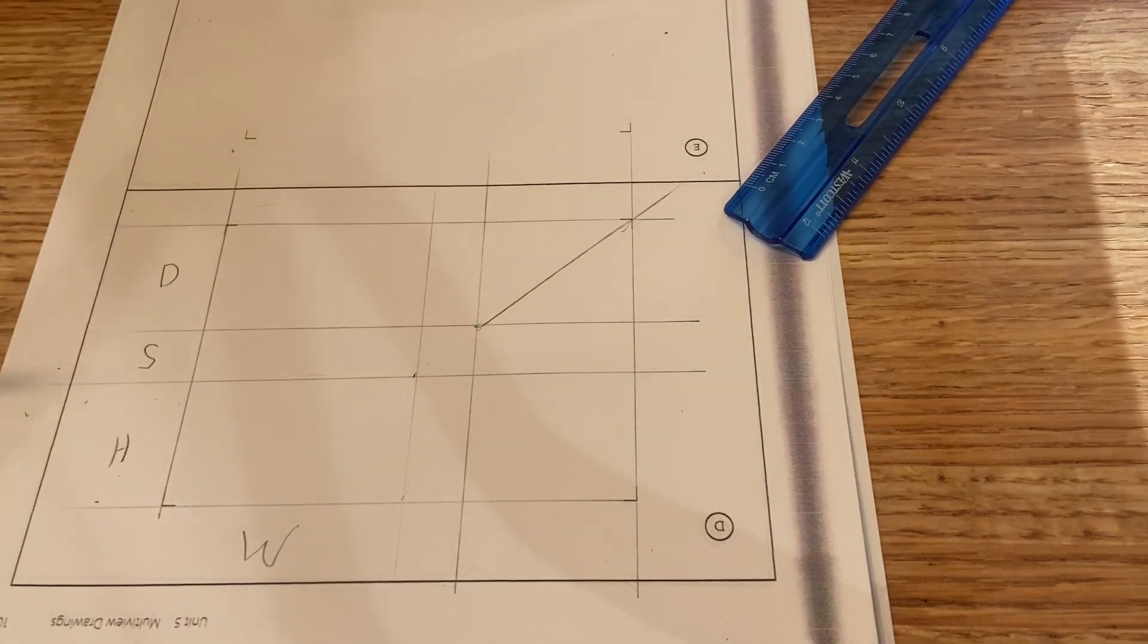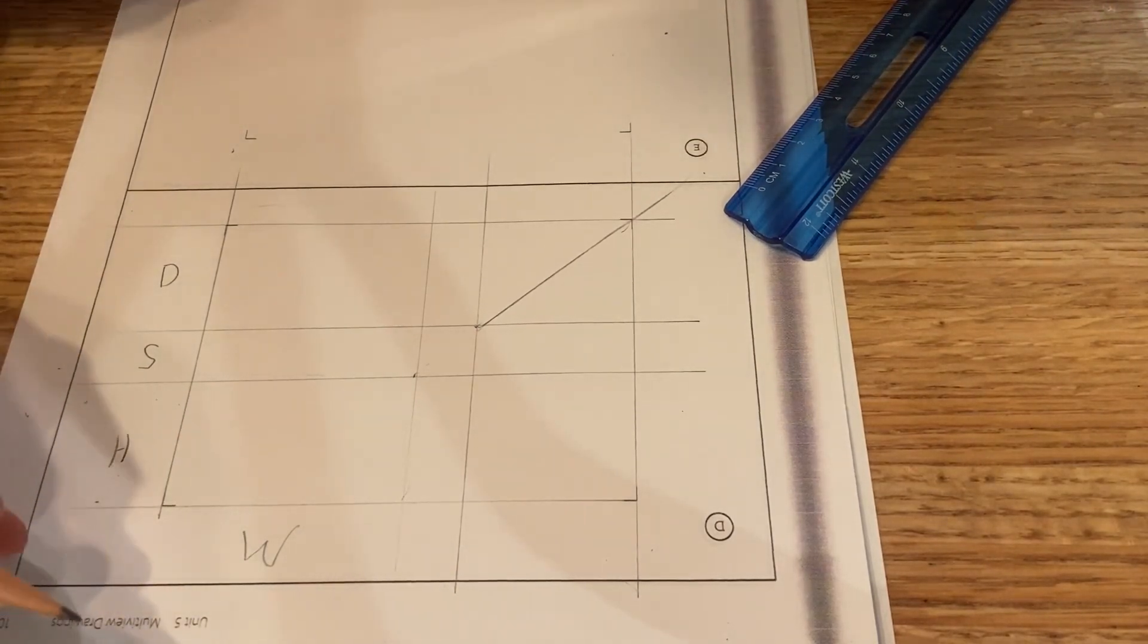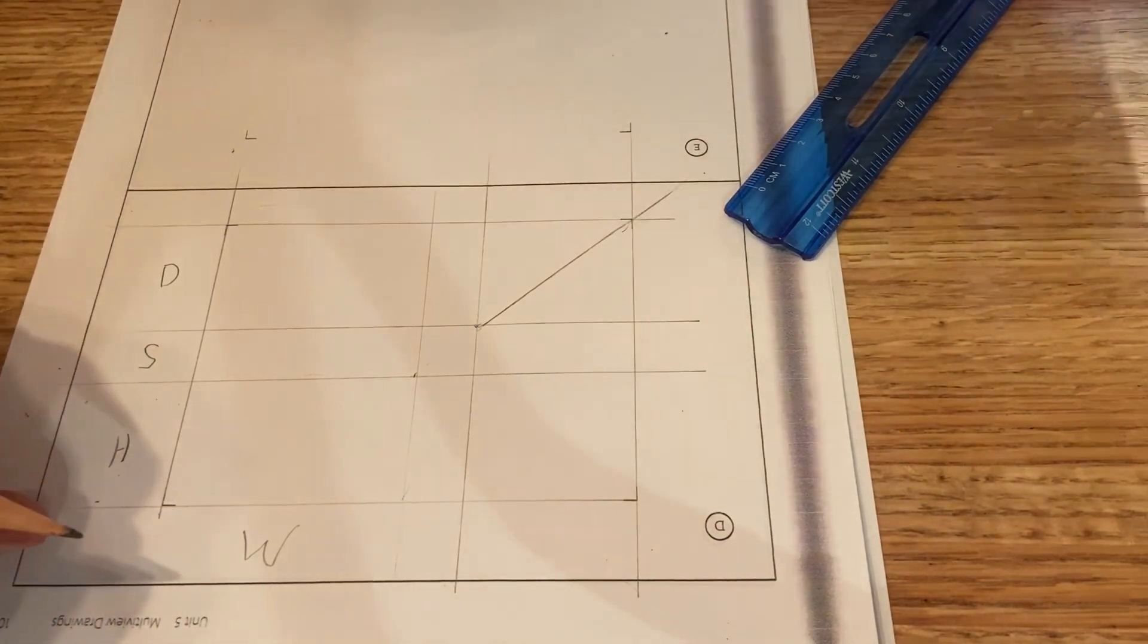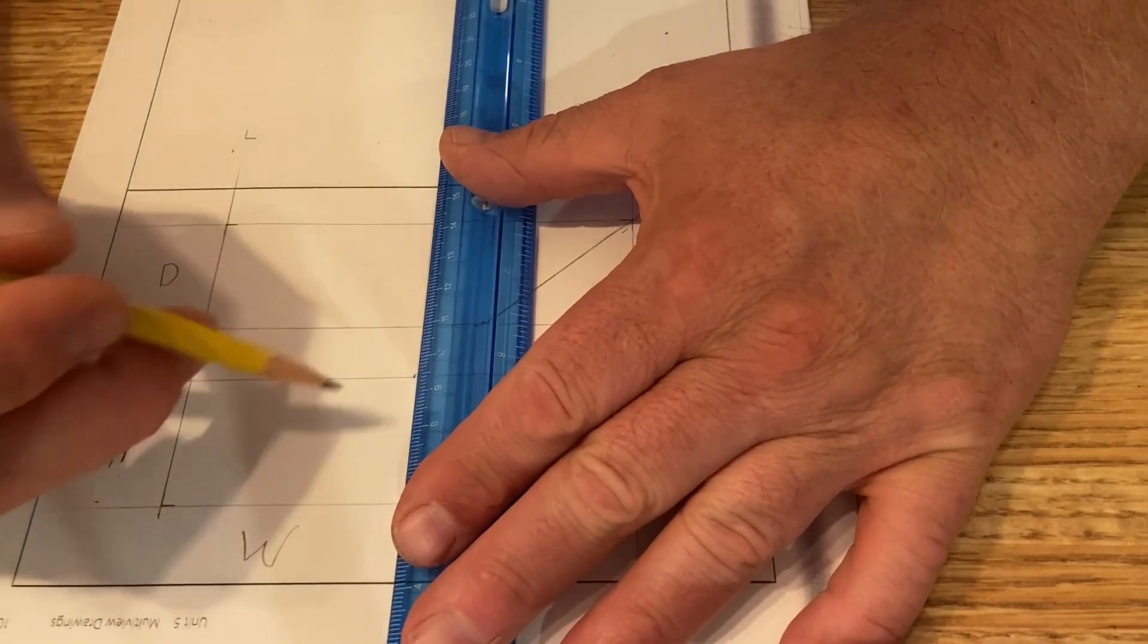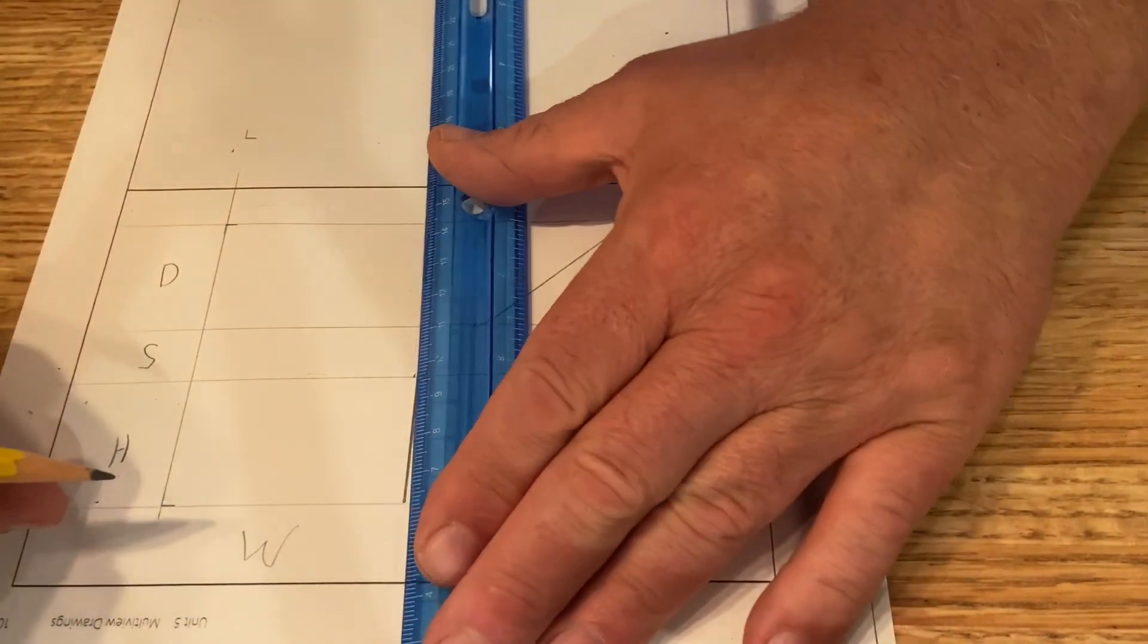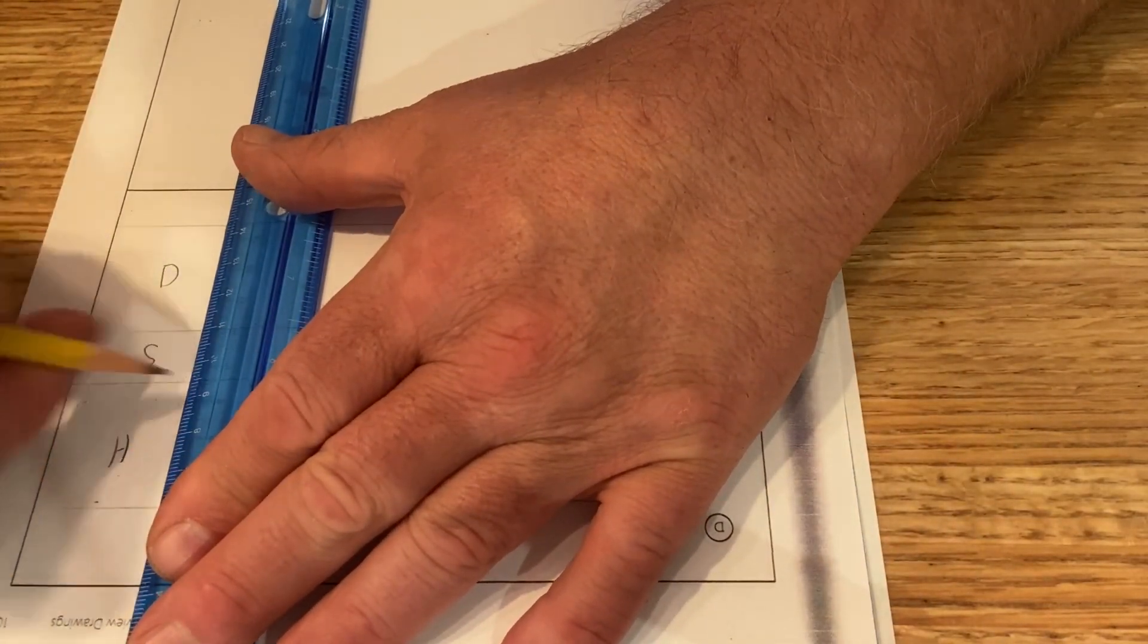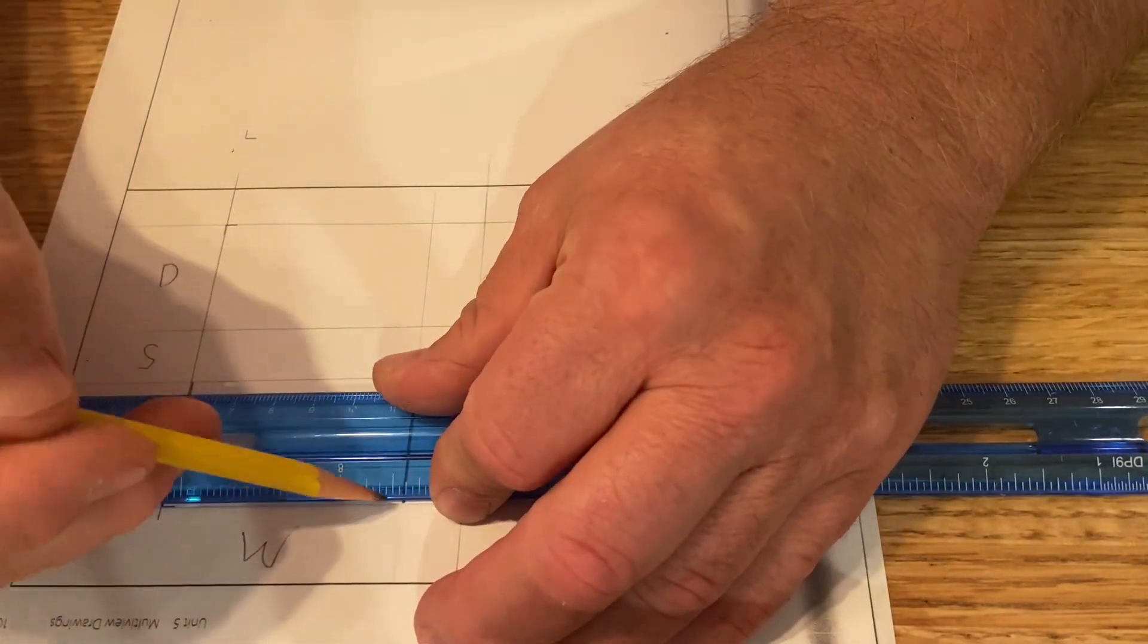Now again, here as we're looking at this, we're looking at drawing number two. And I'm going to go ahead right now, and in drawing two, just by looking at it, I can see that the sides of the front view, so I've got like this U-shaped object here. So I'm going to go ahead and draw this.